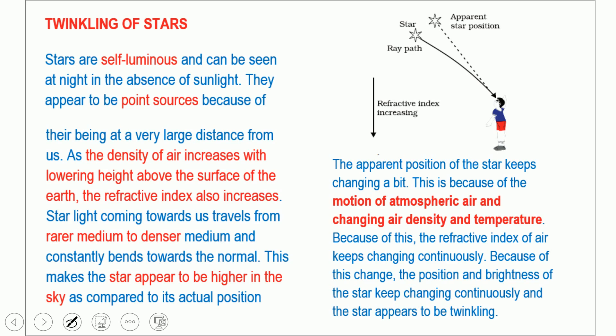In order to twinkle, the source must be a point source. The sun is not a point source — it is an extended source with many points. So we don't feel the sun twinkling. The twinkling of stars is because of atmospheric refraction. Stars appear to be point sources because they are very far away from the Earth.